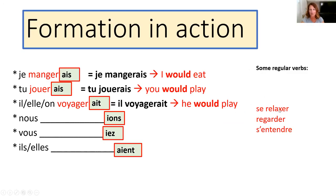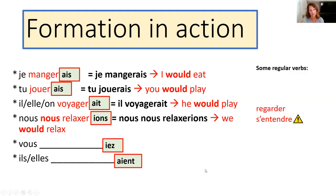Now we need to be a little careful with 'se relaxer' because it's a reflexive verb — you can tell because it has 'se' at the beginning. We need to think about whether the reflexive pronoun needs to change for 'nous'. The reflexive pronoun for 'nous' is also 'nous', so we get: 'nous nous relaxerions' — we would relax.